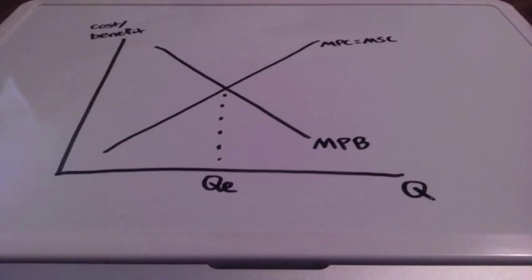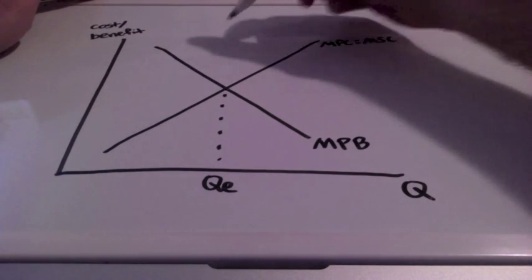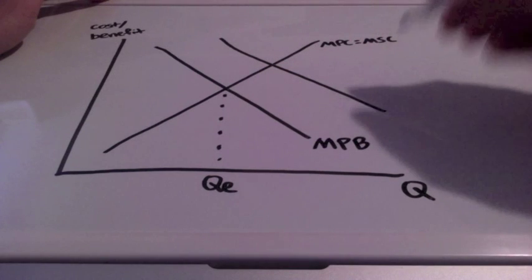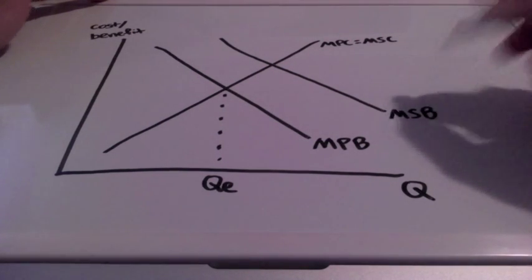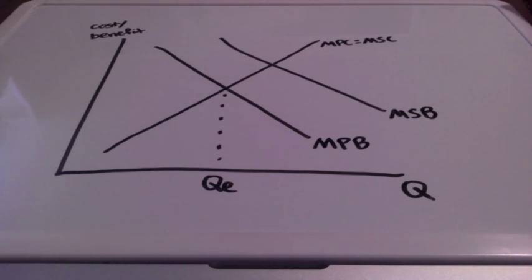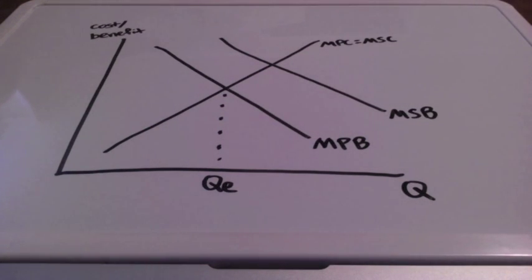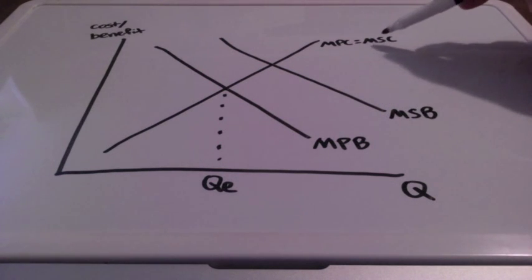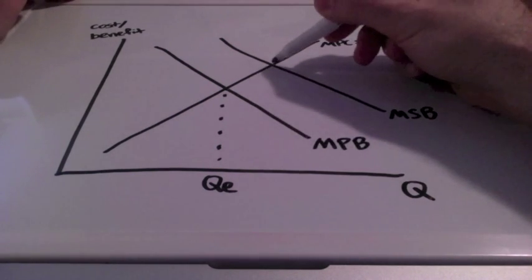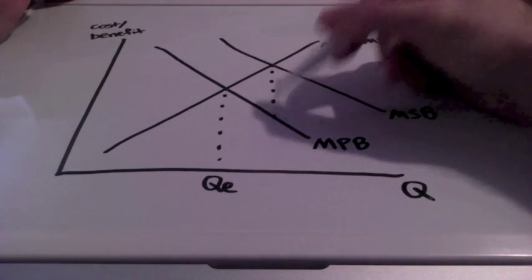When a positive externality exists in an unregulated market, the marginal benefit curve — the demand curve — of the individual making the decision is less than the marginal benefit to society. This represents the marginal social benefit curve. Consumers pay a lower price and consume less quantity than the socially efficient outcome. An example of this would be getting flu shots, getting immunization shots. The socially efficient outcome is where marginal social benefit intersects with the marginal social cost.